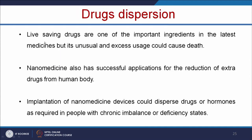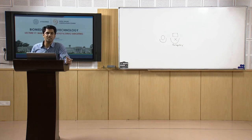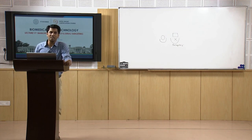Life-saving drugs are important ingredients in modern medicines, but unusual and excess usage could cause death. Nanomedicine has successful applications for the reduction of extra drugs from the human body. Implantation of nanomedicine devices could disperse drugs or hormones as required in people with chronic imbalance or deficiency. These nanocarriers act like smart delivery systems and, according to the need of the patient, can release the drug and save the person from a particular disease.